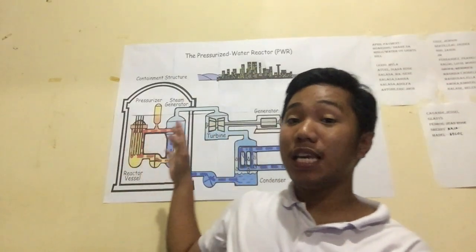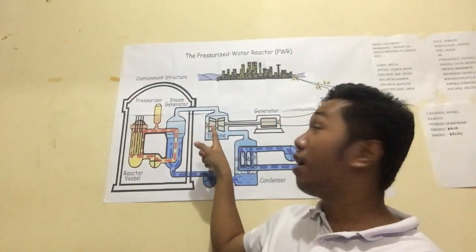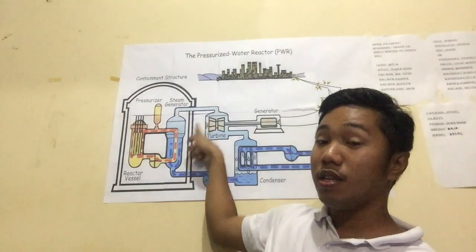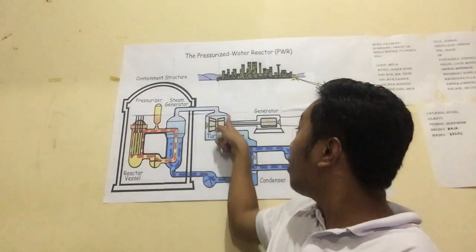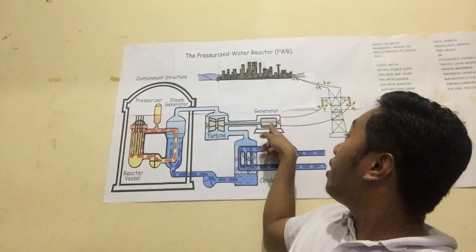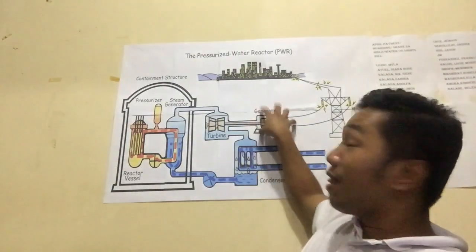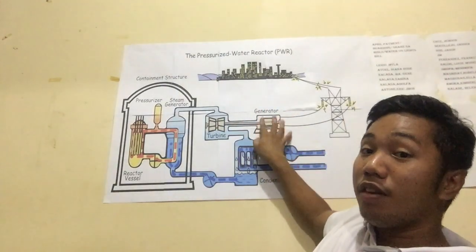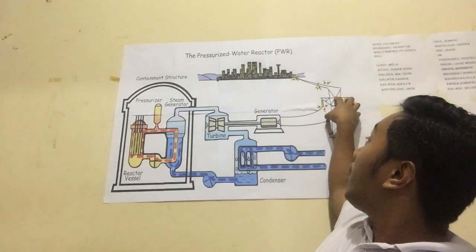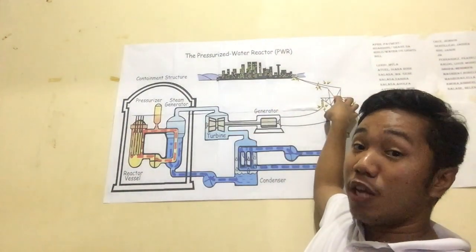As you can see in the PWR, this is the turbine, and this one is the generator. This process transforms heat from the generator into electricity for power generation.